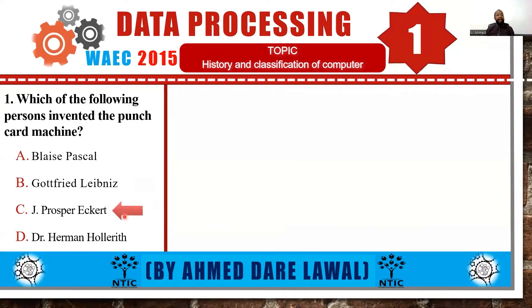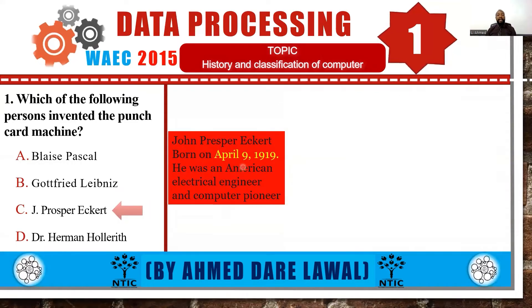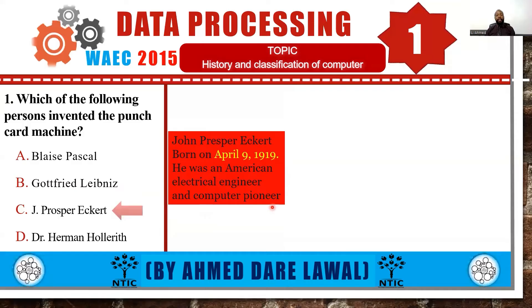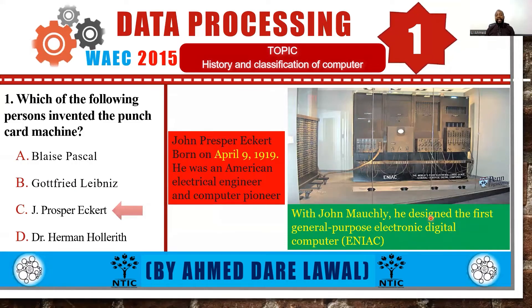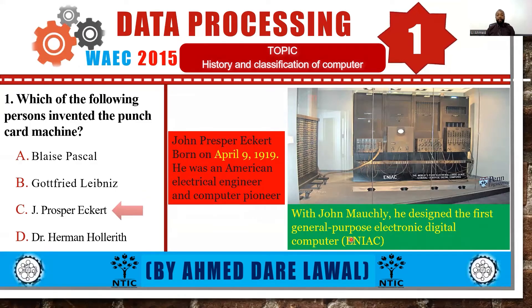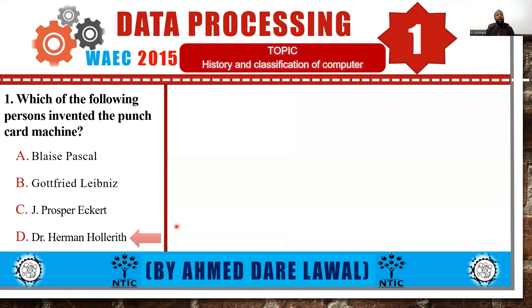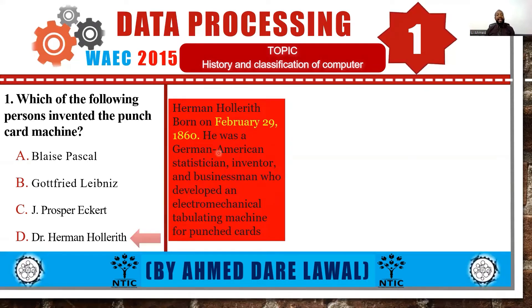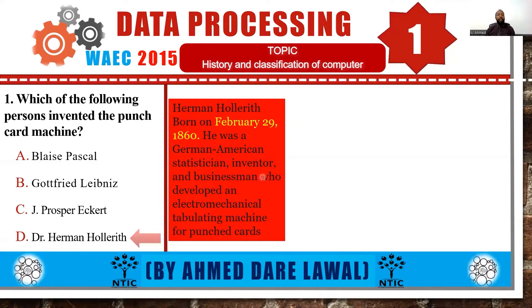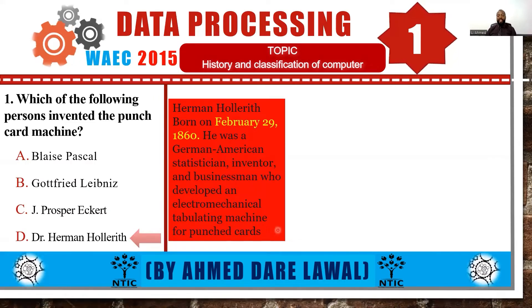Moving forward to John Prosper Herkert, born on April 9, 1919 — he was an American electrical engineer and computer pioneer who, with John Mowry, designed the first general purpose electronic digital computer known as the ENIAC (Electronic Numerical Integrator and Computer). Now let's look at Dr. Eamon Olymeth, born on February 29, 1860 — a German-American statistician, inventor, and businessman who developed an electromechanical tabulated machine for punch cards.